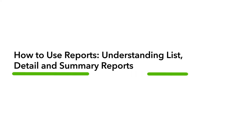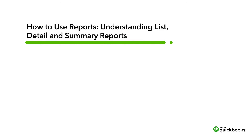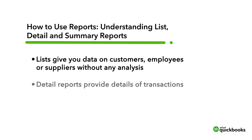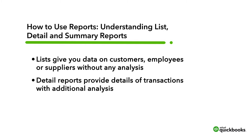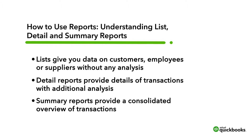There are three types of reports in QuickBooks, and every report is one of these three types. Lists give you data on customers, employees, or suppliers without any analysis. Detail reports provide details of transactions with additional analysis. Summary reports provide a consolidated overview of transactions.